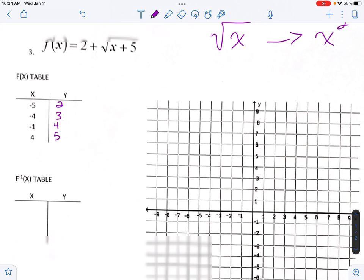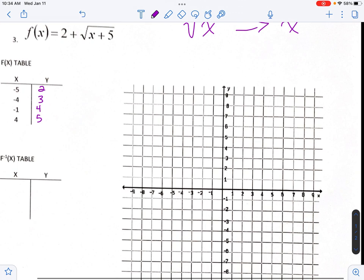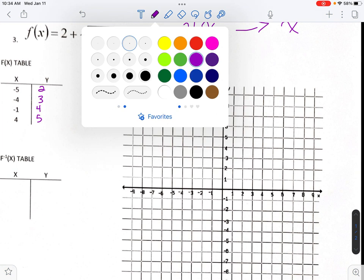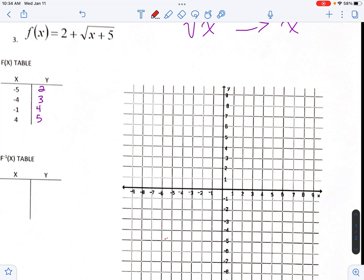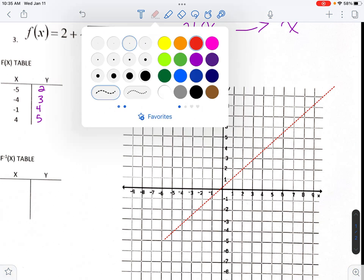Let's take those data points and plot them on our graph. Now before we do that, let's draw our line of reflection here. Our line of reflection is the y equals x. It's the diagonal line. That's right here. That's close enough.